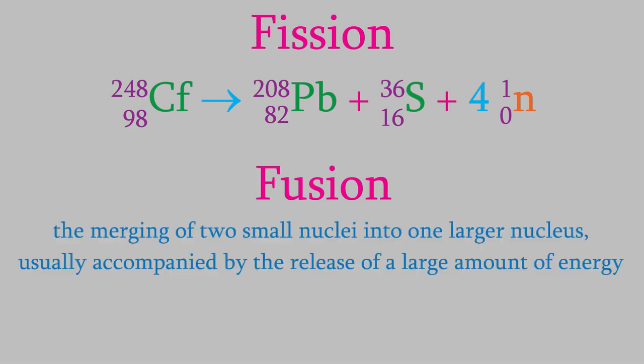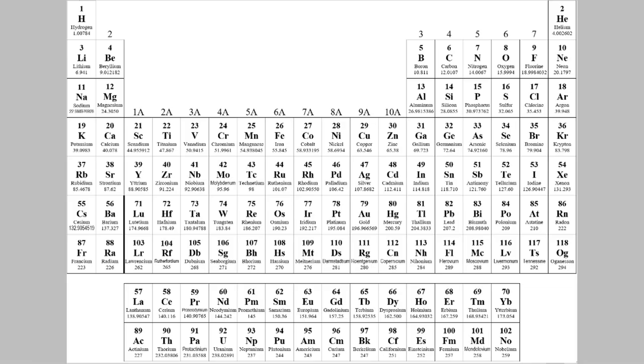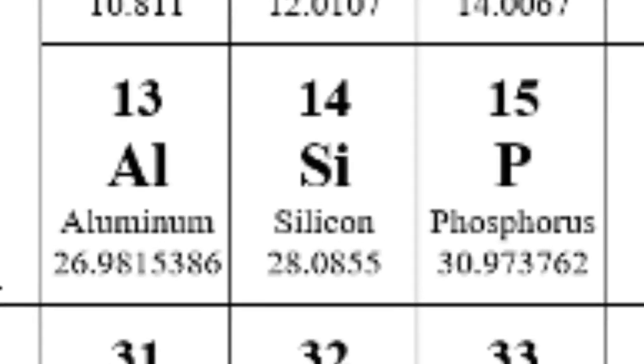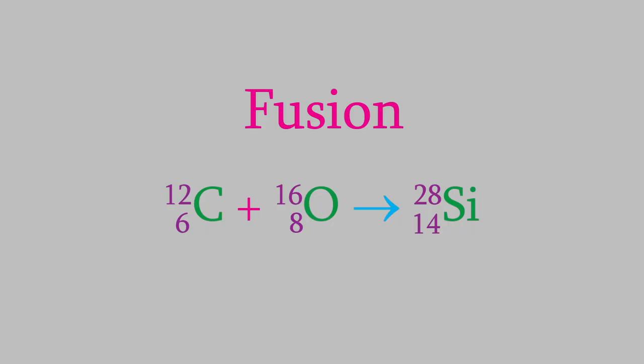Like fission, nuclear fusion can release a large amount of energy. For example, an isotope of carbon-12 can combine in a fusion reaction with oxygen-16. In order to balance the reaction, we can see that the mass number will be 28 for the product, and the atomic number is 14. If we check the periodic table, we can see that the element with atomic number 14 is silicon, so that's what the product is.